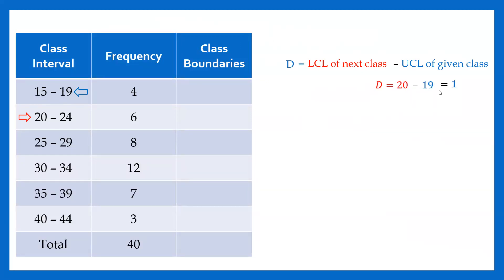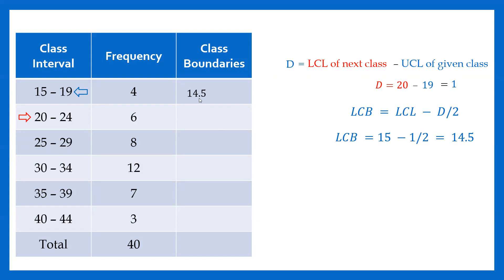That difference should be equal to 1. So 20 minus 19 is 1. Then we can easily calculate the lower class boundaries of each class using this formula: lower class limit minus d divided by 2. The difference divided by 2 is 0.5. So the lower class boundaries are: 14.5, 19.5, 24.5, 29.5, 34.5, and 39.5.